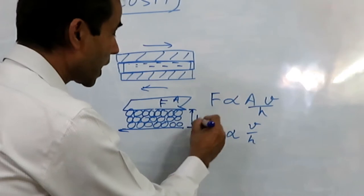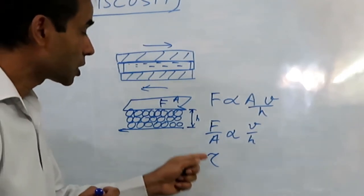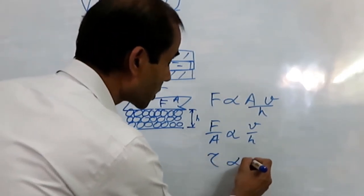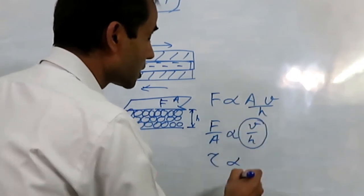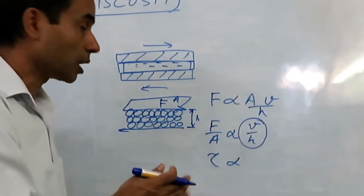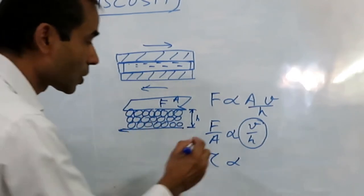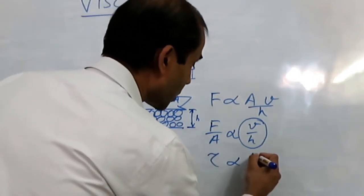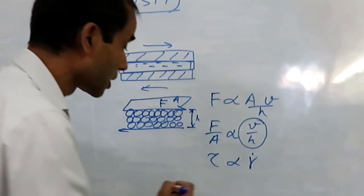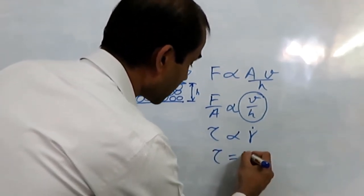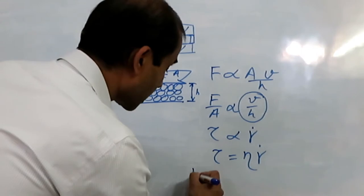We can say that force divided by area is proportional to speed divided by the separation distance. When the force is tangential, force divided by area is called shear stress, written as tau. So tau is proportional to velocity divided by H. This term — velocity divided by H — is known as the shear rate, symbolized as gamma dot, meaning the rate at which we are shearing the molecules over one another. Therefore, shear stress is proportional to shear rate, and the constant of proportionality eta is known as the viscosity.